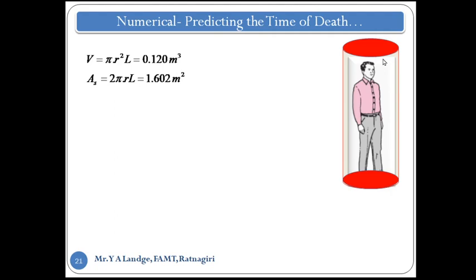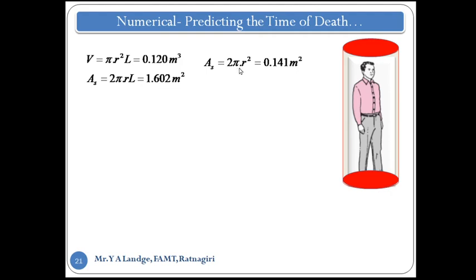The volume of the cylindrical structure is pi r squared times L. Putting in the values of r and L, we get the volume as 0.120 meter cube. The lateral surface area is 2 pi r L, which gives 1.602 meter square. We also consider the top and bottom circular areas: 2 pi r squared, which gives 0.141 meter square.